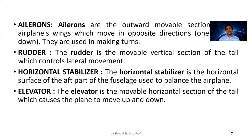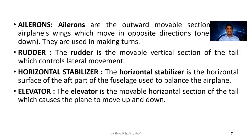There are two types of stabilizer: one is a horizontal stabilizer and another one is a vertical stabilizer. The horizontal stabilizer is used for horizontally stabilizing the aircraft, and the vertical stabilizer is used to stabilize the aircraft vertically.